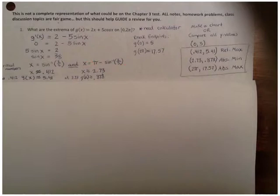So when you get these two critical numbers, 0.412 and 2.73, which you can evaluate in your calculator, you can substitute those back in for the original function g. Substituting them back in for the original function g, you would end up with 5.41 and 0.878.